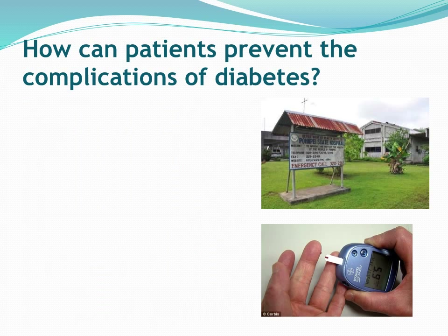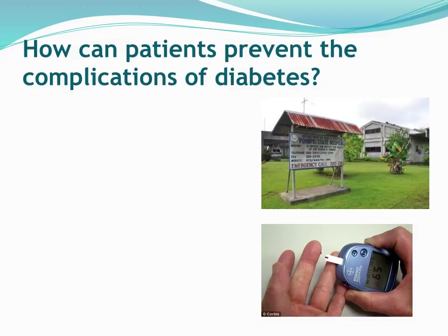Let's talk about how patients can prevent the complications of diabetes. Given that the top four countries in the world for the burden of type 2 diabetes are found right here in the Pacific, we have a large number of individuals. We need to talk about how we can control complications so that we don't end up with these high economic and social costs from amputations, diabetic retinopathy, and so on.